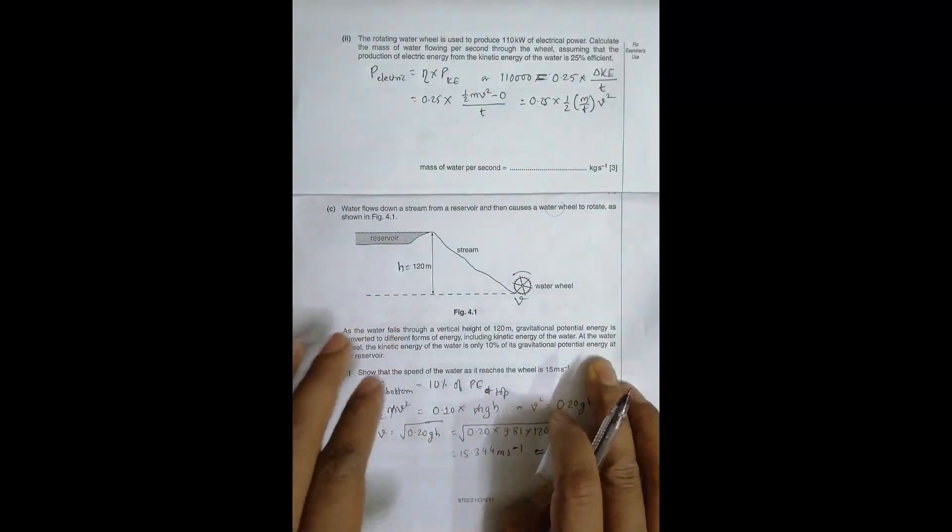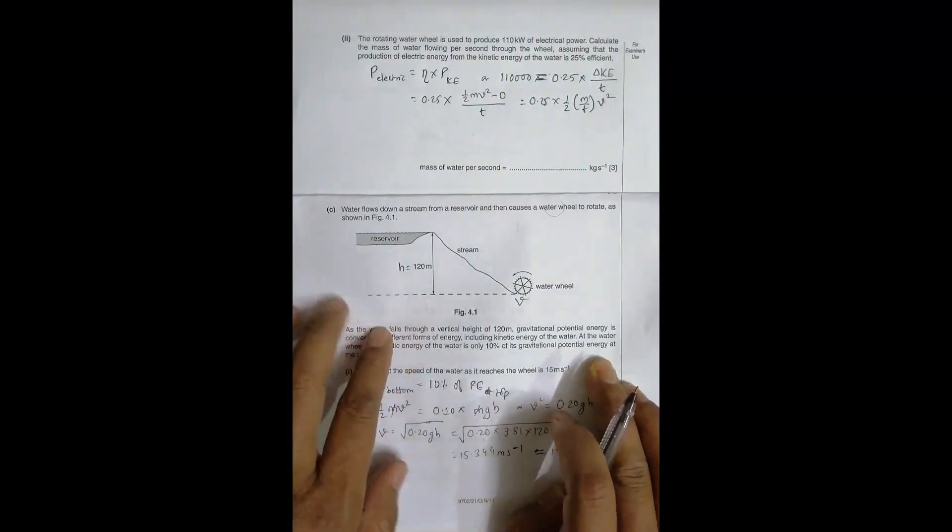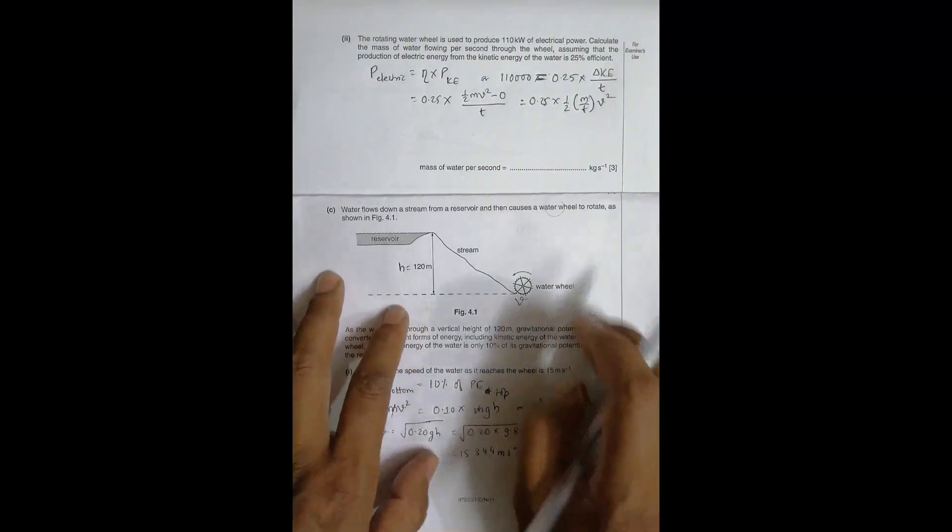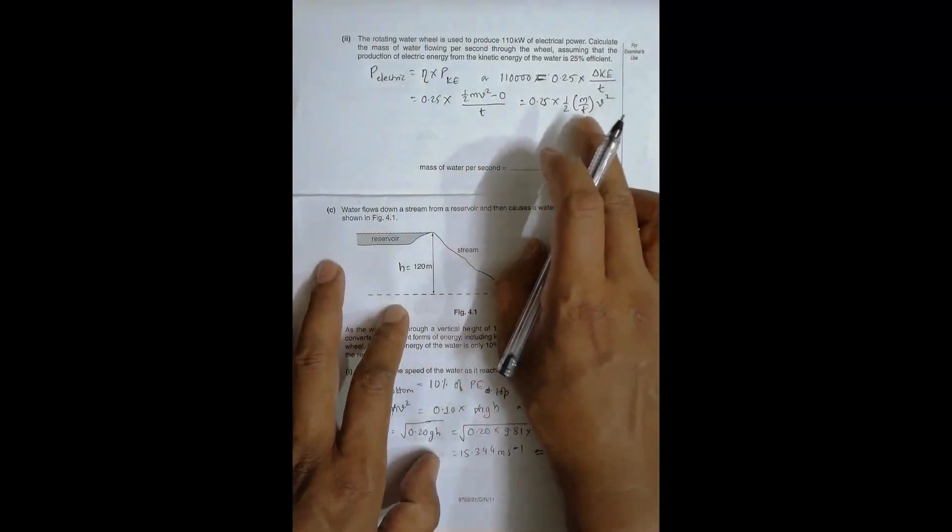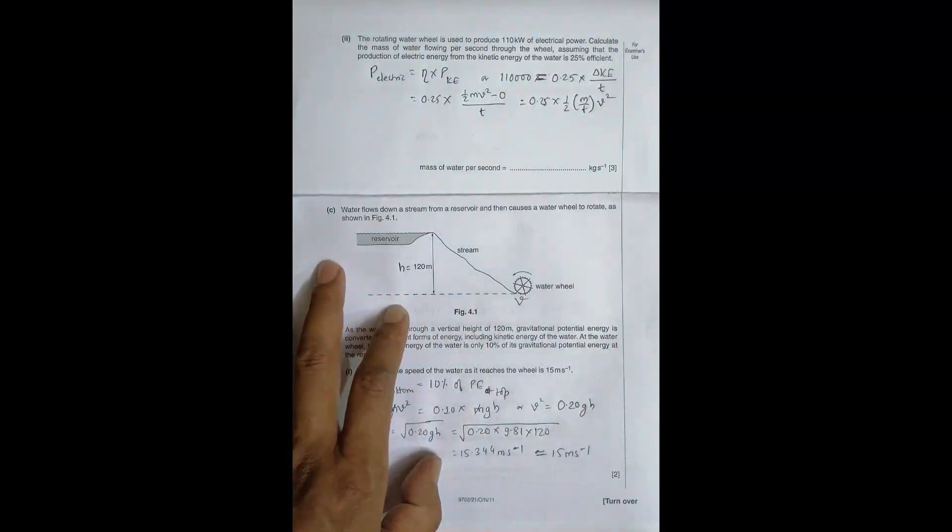So what you have to find here is M by T. M by T is the rate of flow of water in terms of mass per second. So rate can be of two types. One is volume per second, volume per unit time, and another is mass per unit time.